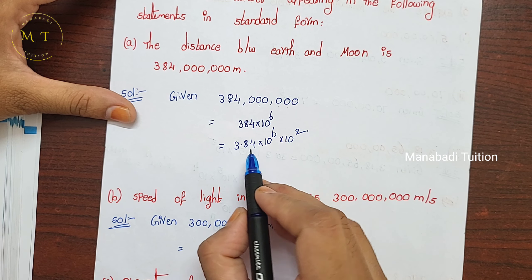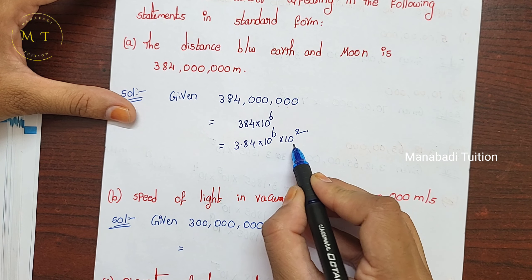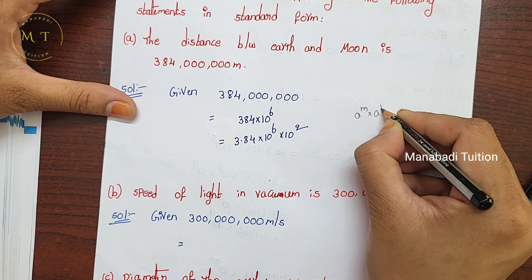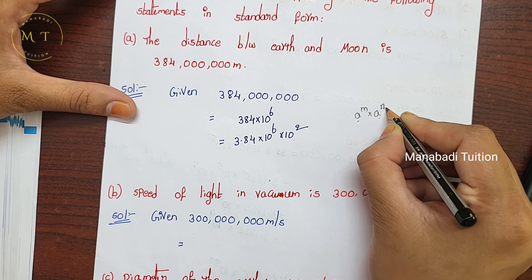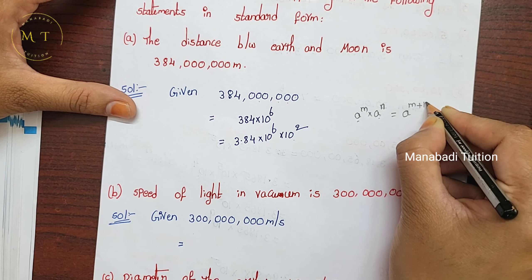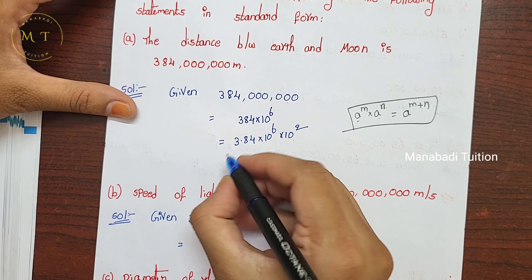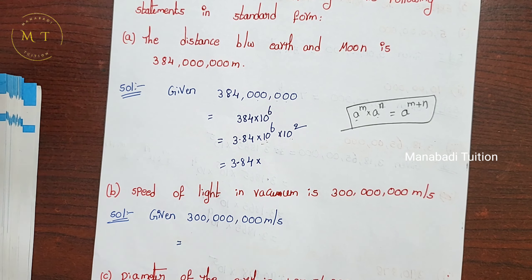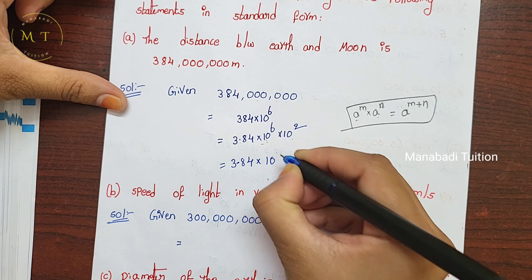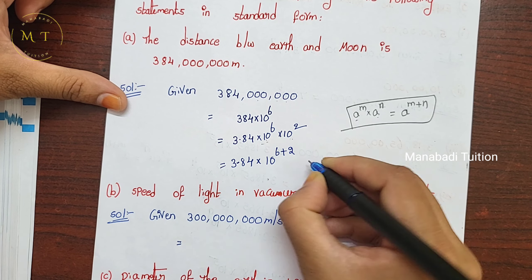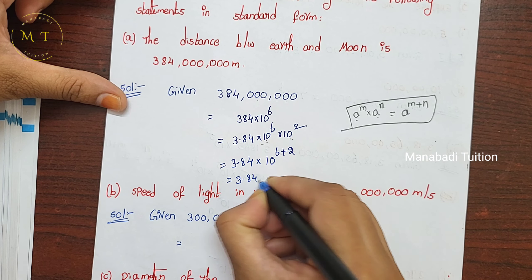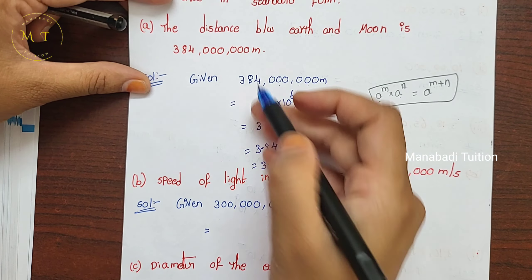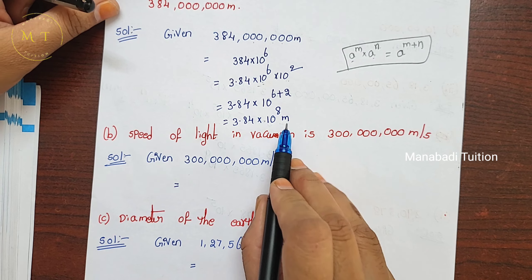Since the base is the same, add the exponents: 6 plus 2. That gives 3.84 into 10 power 8. Since exponents are added together, write the complete answer properly.